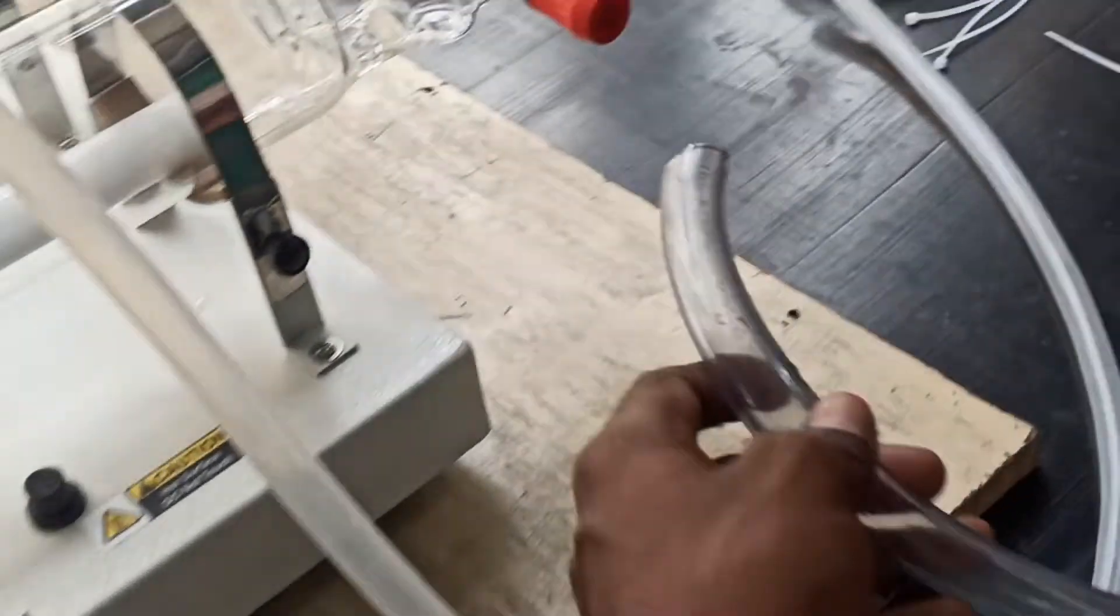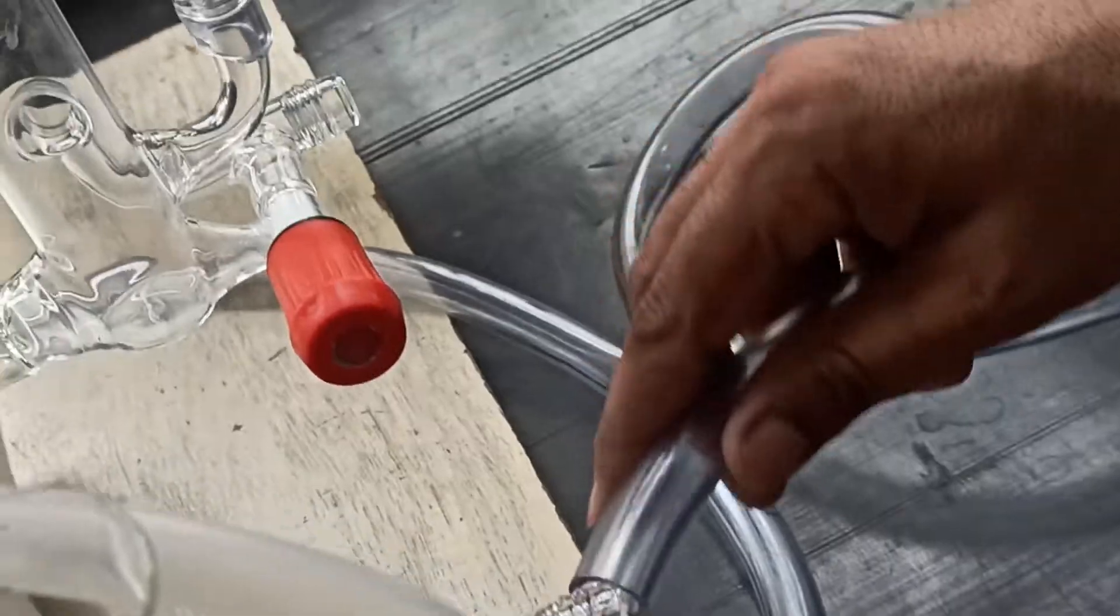Connect PVC pipes to the overflow drain point of both boiling chambers as demonstrated.